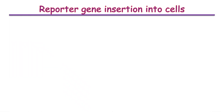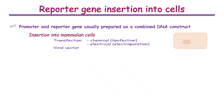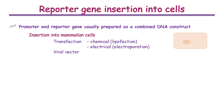The reporter gene and promoter are usually prepared in the lab as a combined construct, which is then inserted into cells. The methods used with mammalian cells include chemical transfection with something like lipofectin, or electrical transfection using electroporation to reversibly permeabilise cell membranes.